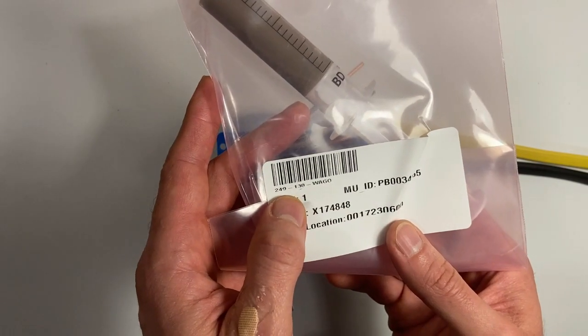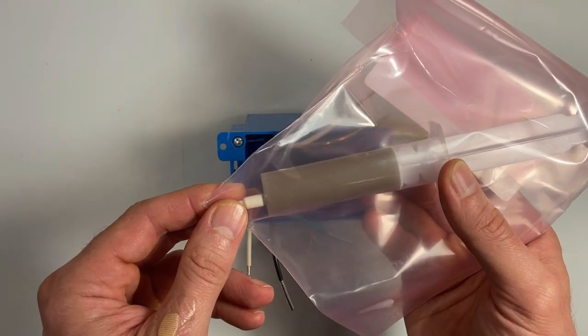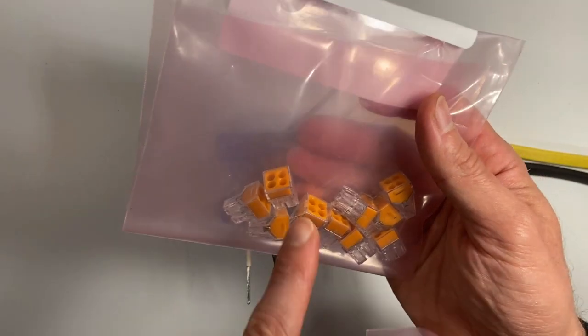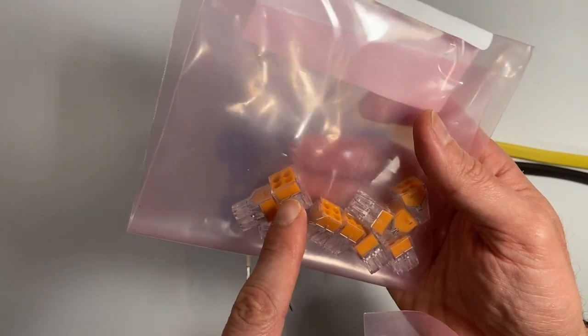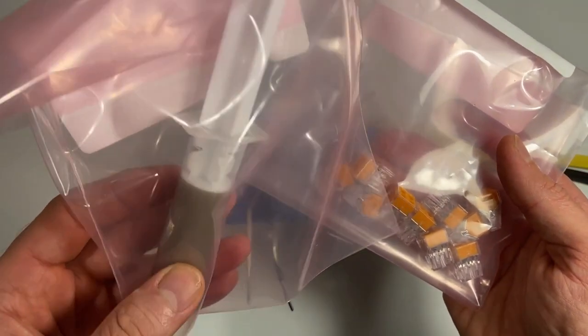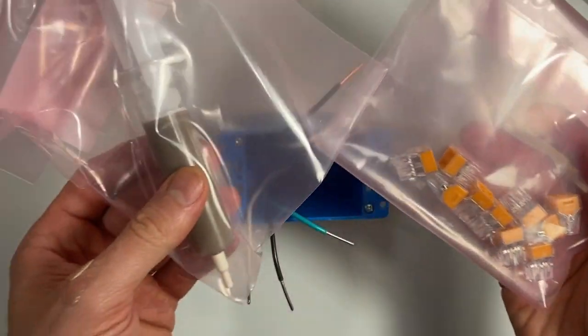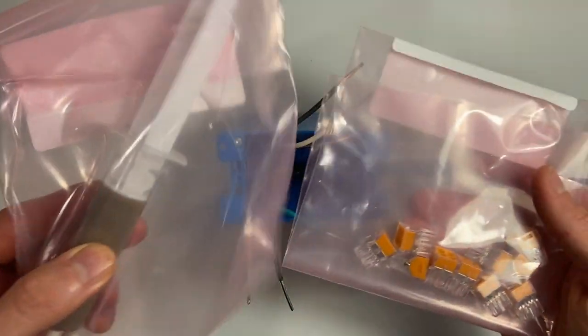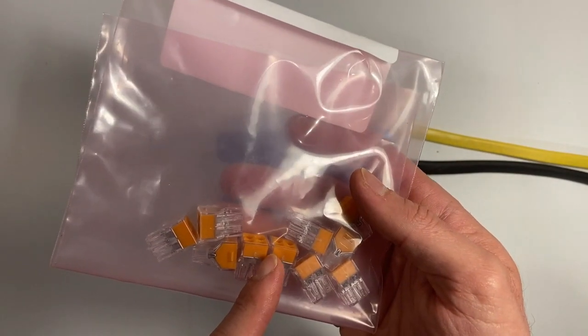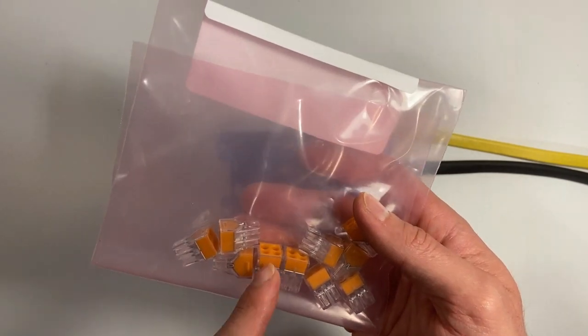But in that case you have to use their own paste. It's called Alu-Plus, also made by Wago. That's their part number. It's not expensive, you can pick one of these syringes up for around five dollars. And these are available all over the place. There are look-alikes, Ideal makes similar looking ones, but for use on aluminum with this paste make sure you're picking up the authentic Wago ones and use their own paste.